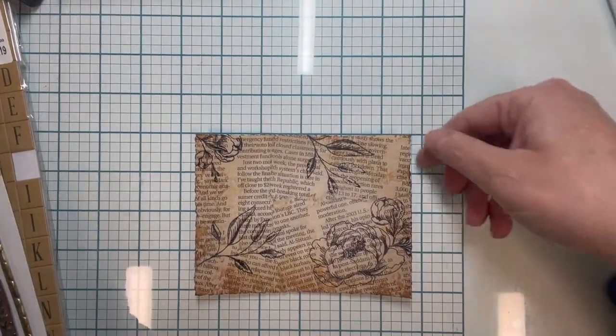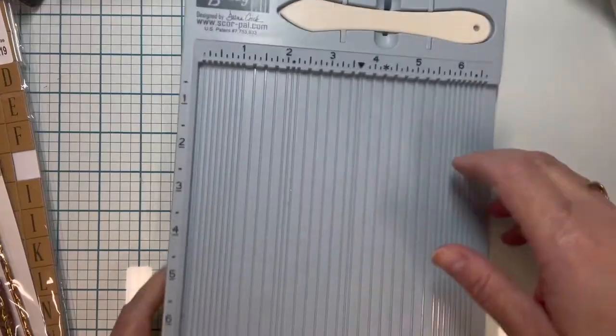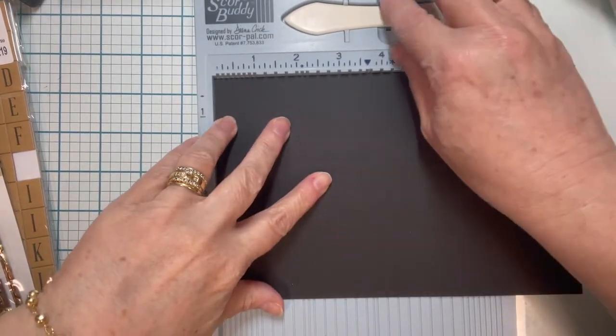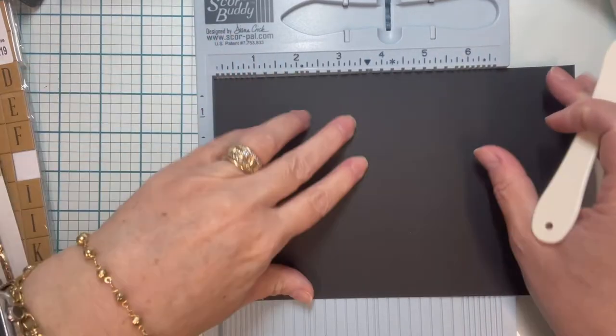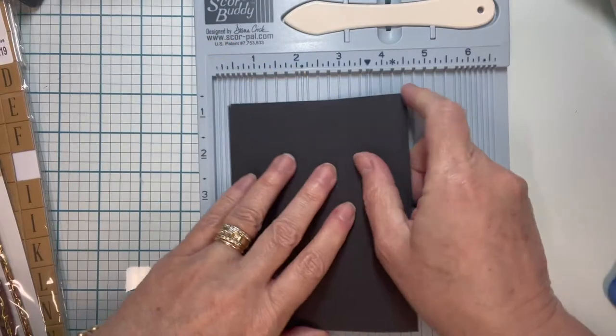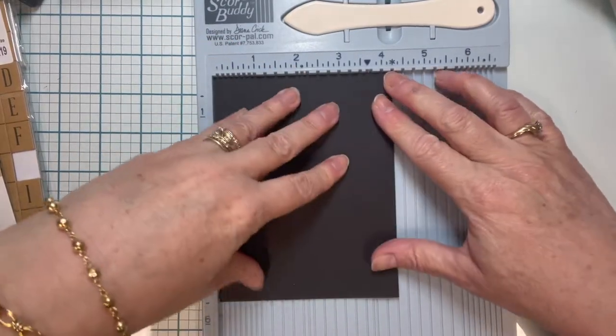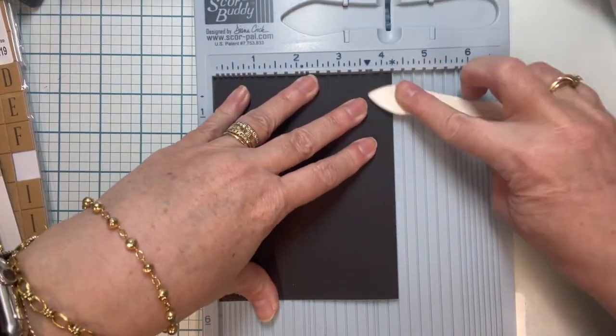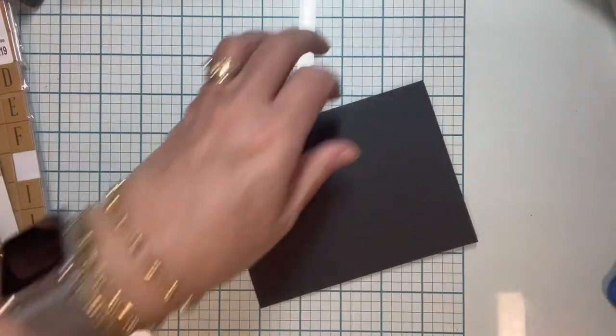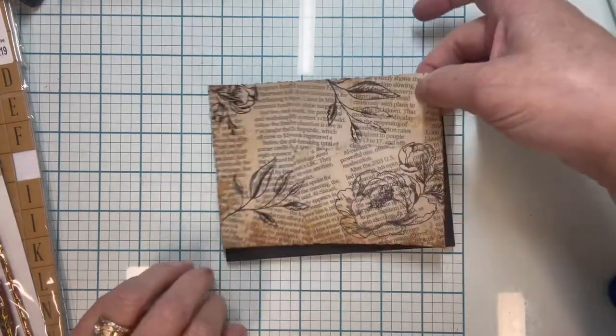So once I have all that stamping done while I let that dry a little bit, I'm going to go ahead and make my card base. Again, I've just taken a half a sheet of eight and a half by eleven black card stock. I'm scoring it down the middle at four and a quarter and folding it to make my card base for a black card base. Of course you'll want to make your own insert for the inside of the card in a lighter color so that whatever you write or stamp will show up.